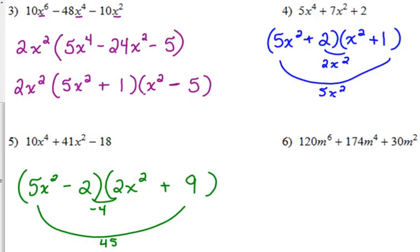Number 6. Last example. There is a GCF there. Thankfully, that would be a mess if there wasn't. Does 6 go into 174? Yeah, okay, good. 6m squared. We take out 6m squared. That leaves us with 20m to the fourth. What is 174 divided by 6? 29. So 29m squared plus 5.